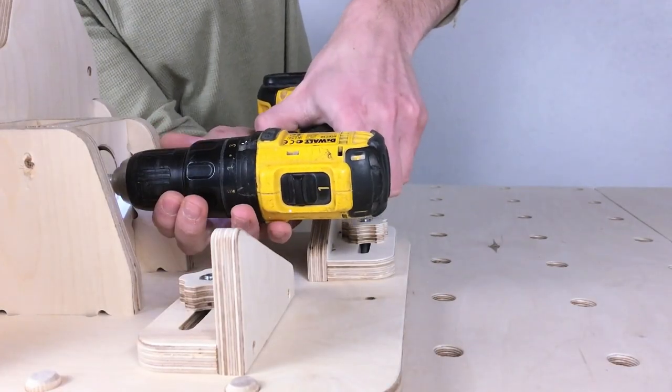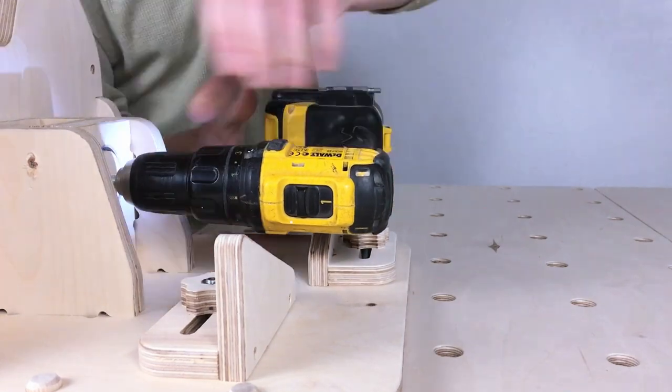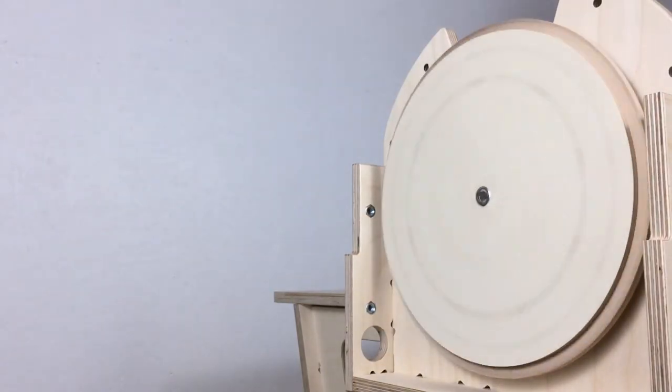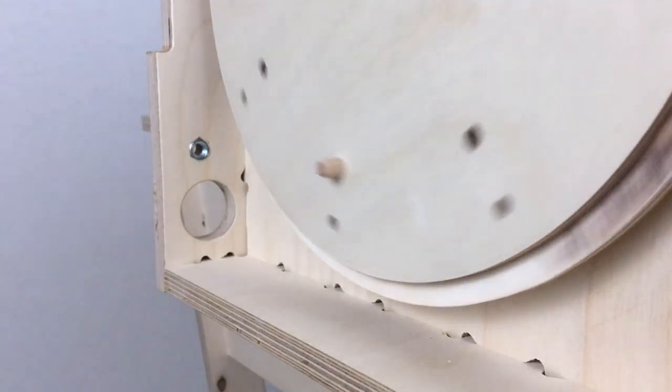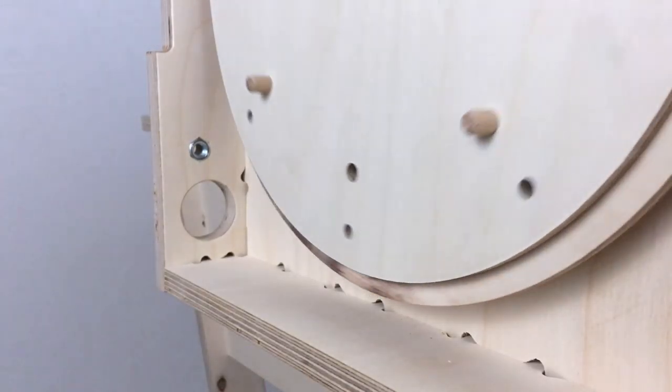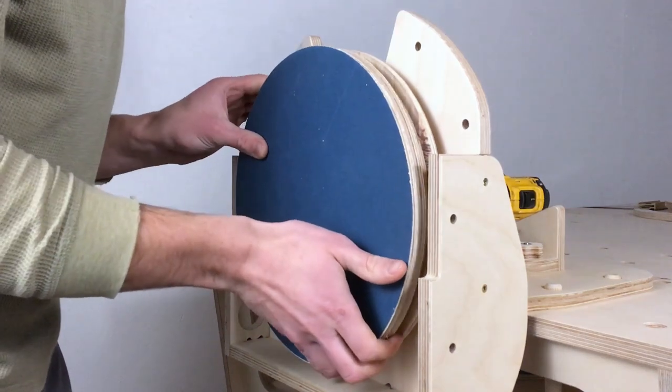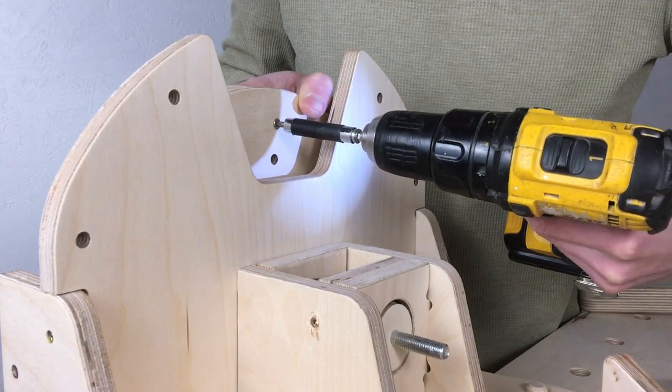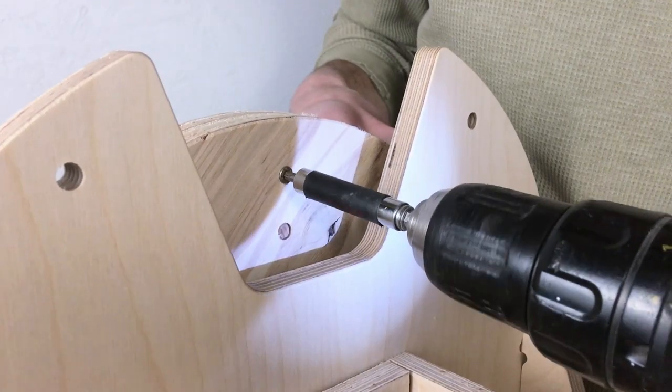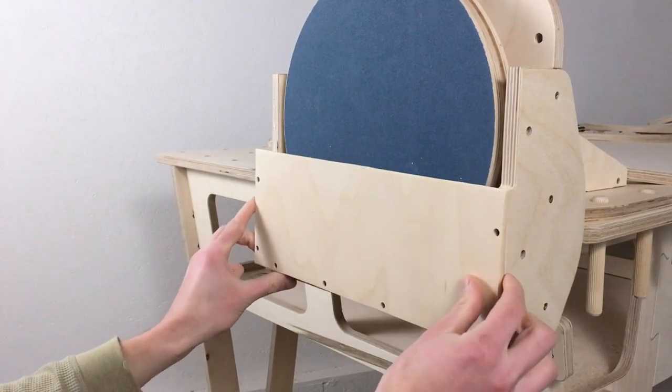Next I attached the drill to the axis and gave it a spin. Everything worked nicely. So I installed four small dowels in the base disc. These will be useful for positioning the sandpaper disc. I added some screws to ensure that the sandpaper disc stays in place while spinning. After that I attached the front wall.